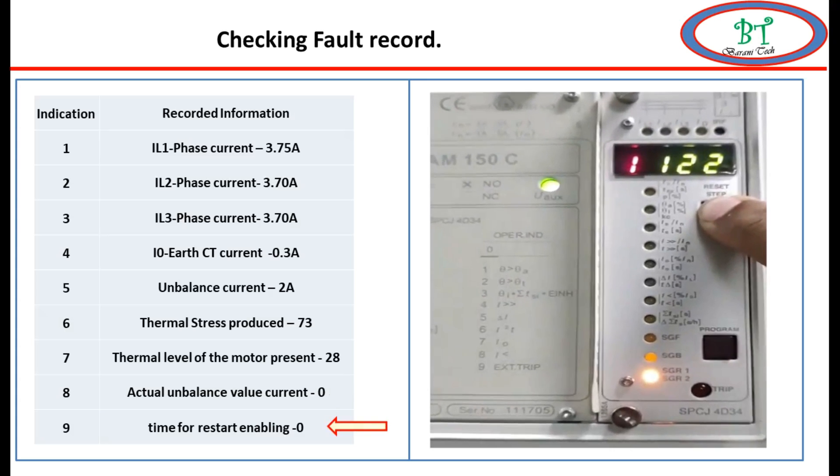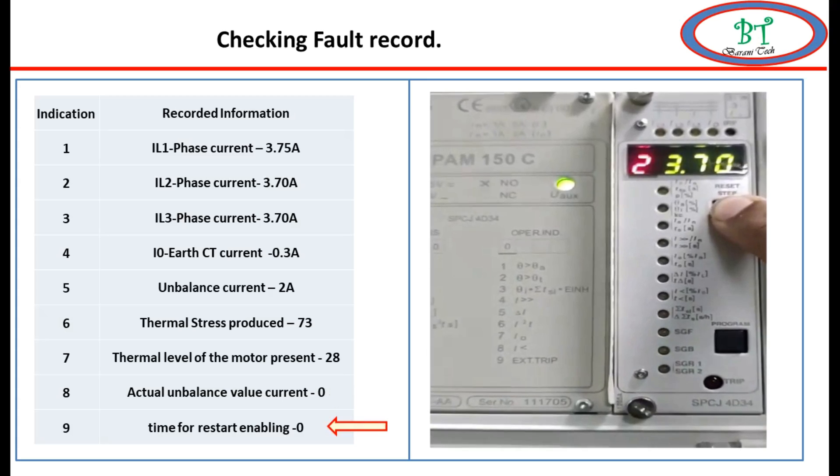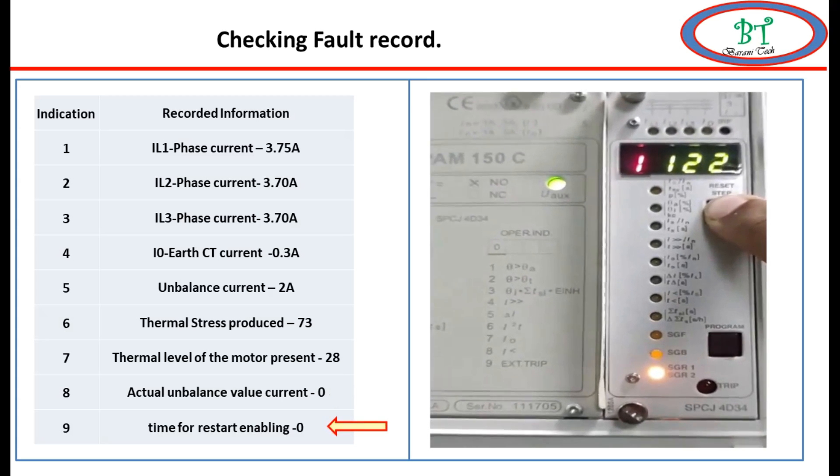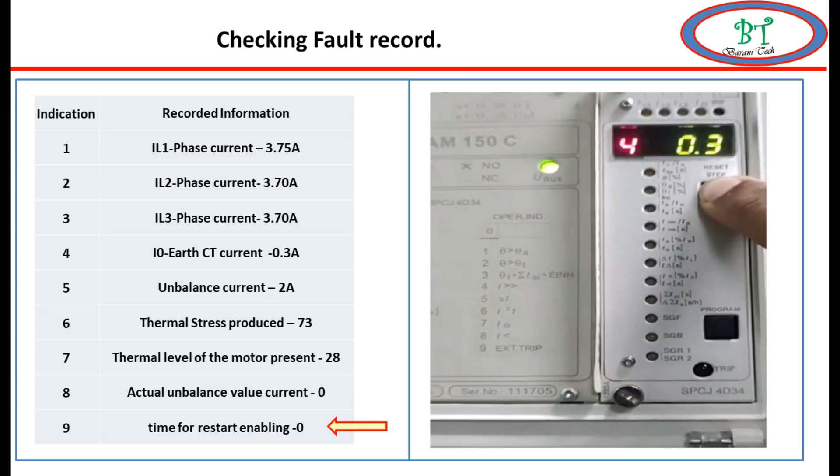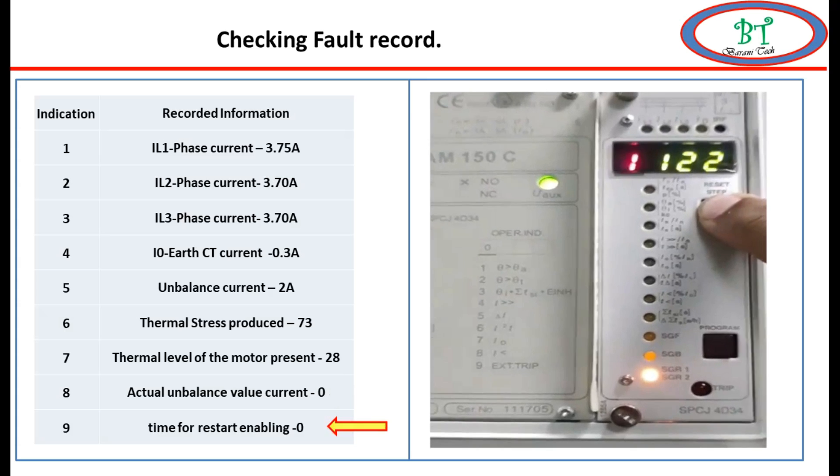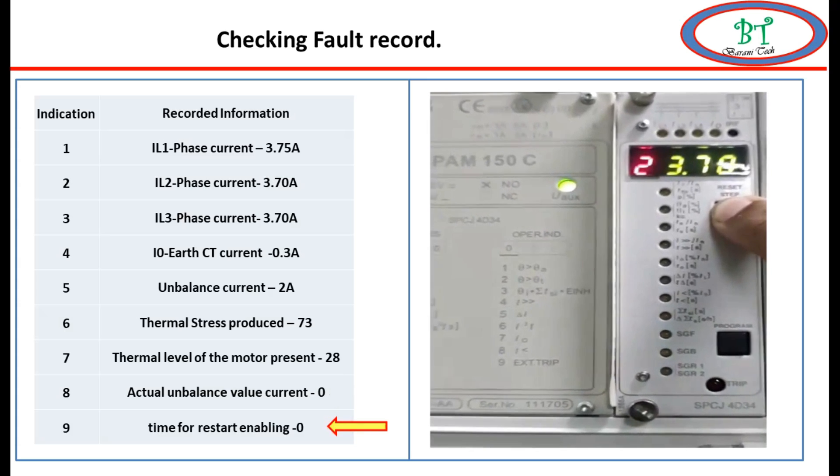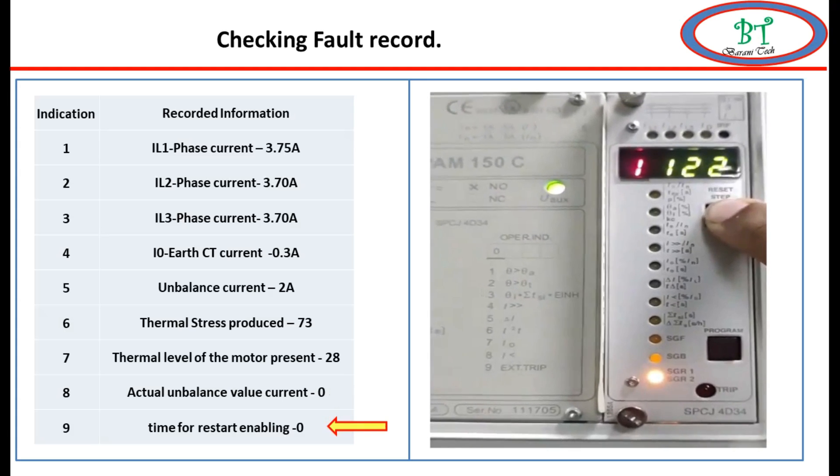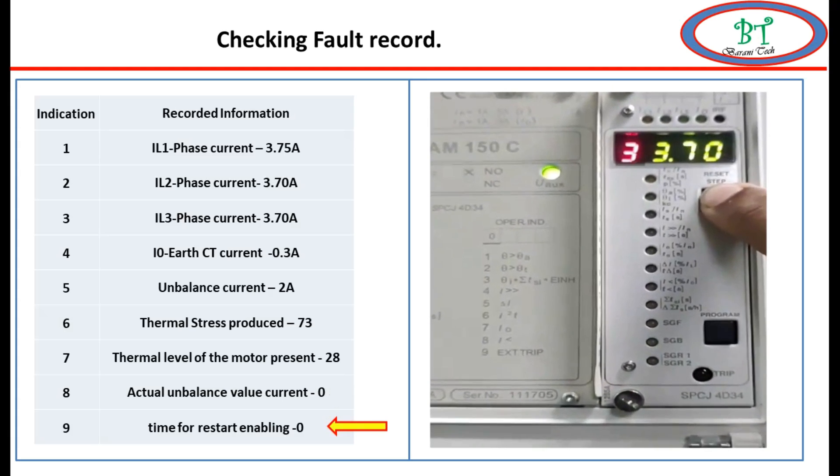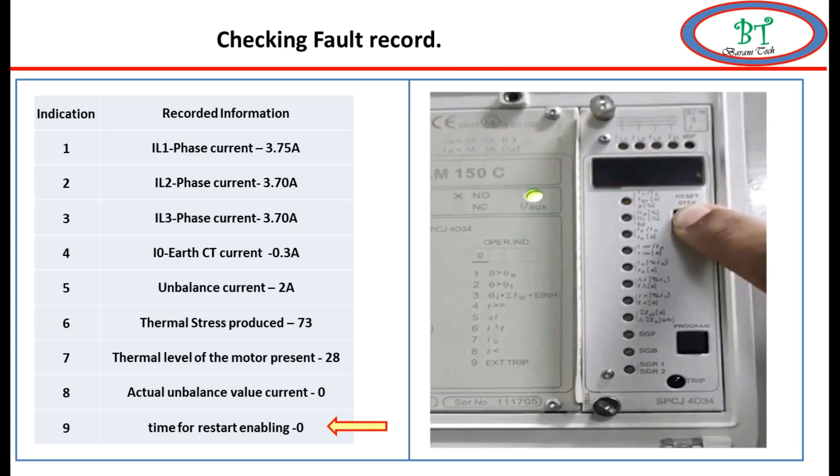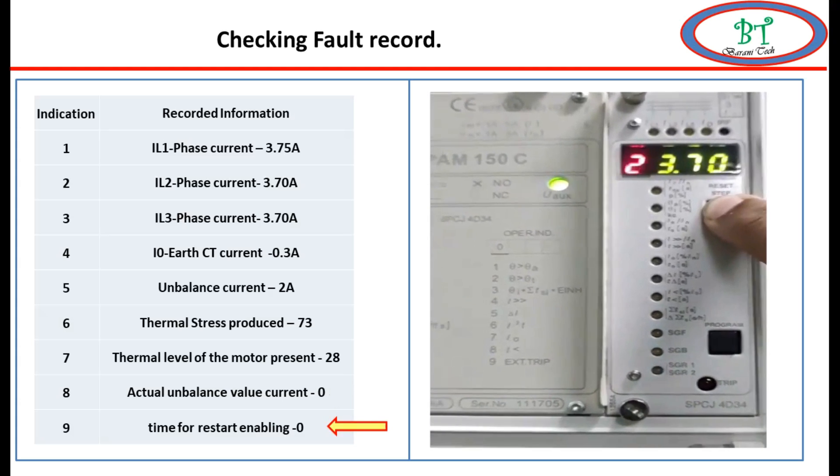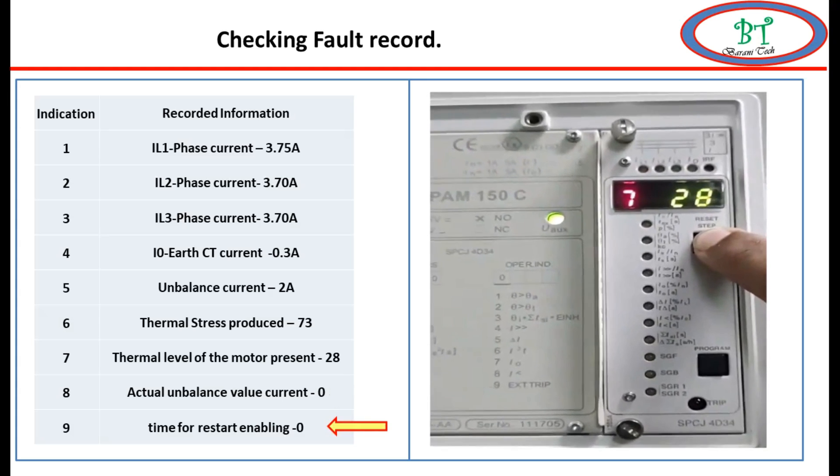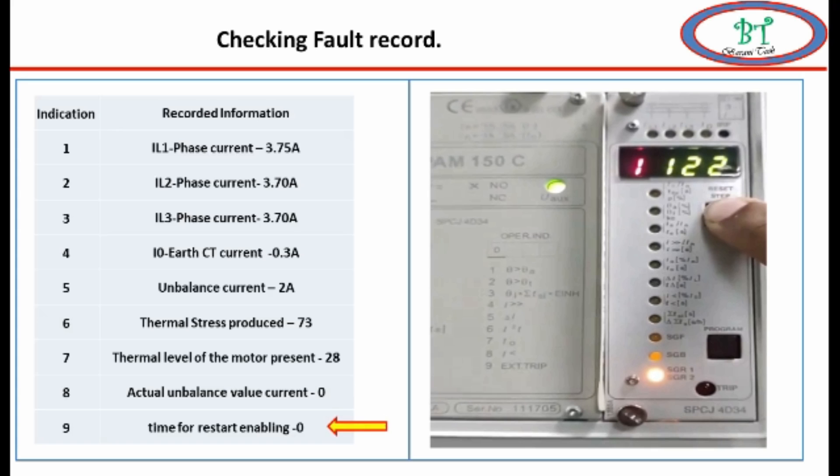Ninth is time for reset enable. This is to know how much time we need for the start enable to activate. This is the time it will show between two start-stops of the motor. When we start-stop the motor for next start, if it is having 5 seconds, then the countdown will start here. When it reaches zero, then only we can start the motor. This all will be very useful at the time of operation and maintenance on the site.